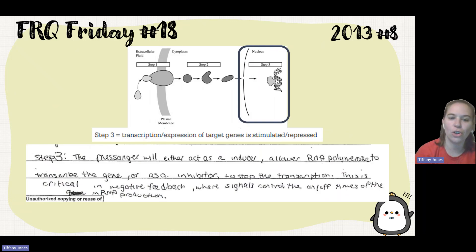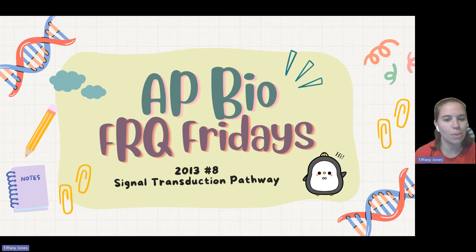So the messenger will either act as an inducer and allow RNA polymerase to transcribe the gene or as an inhibitor to stop transcription. This is critical in negative feedback where signals control on-off times of the mRNA production. So if that was helpful, remember to buy a penguin message that says bio.